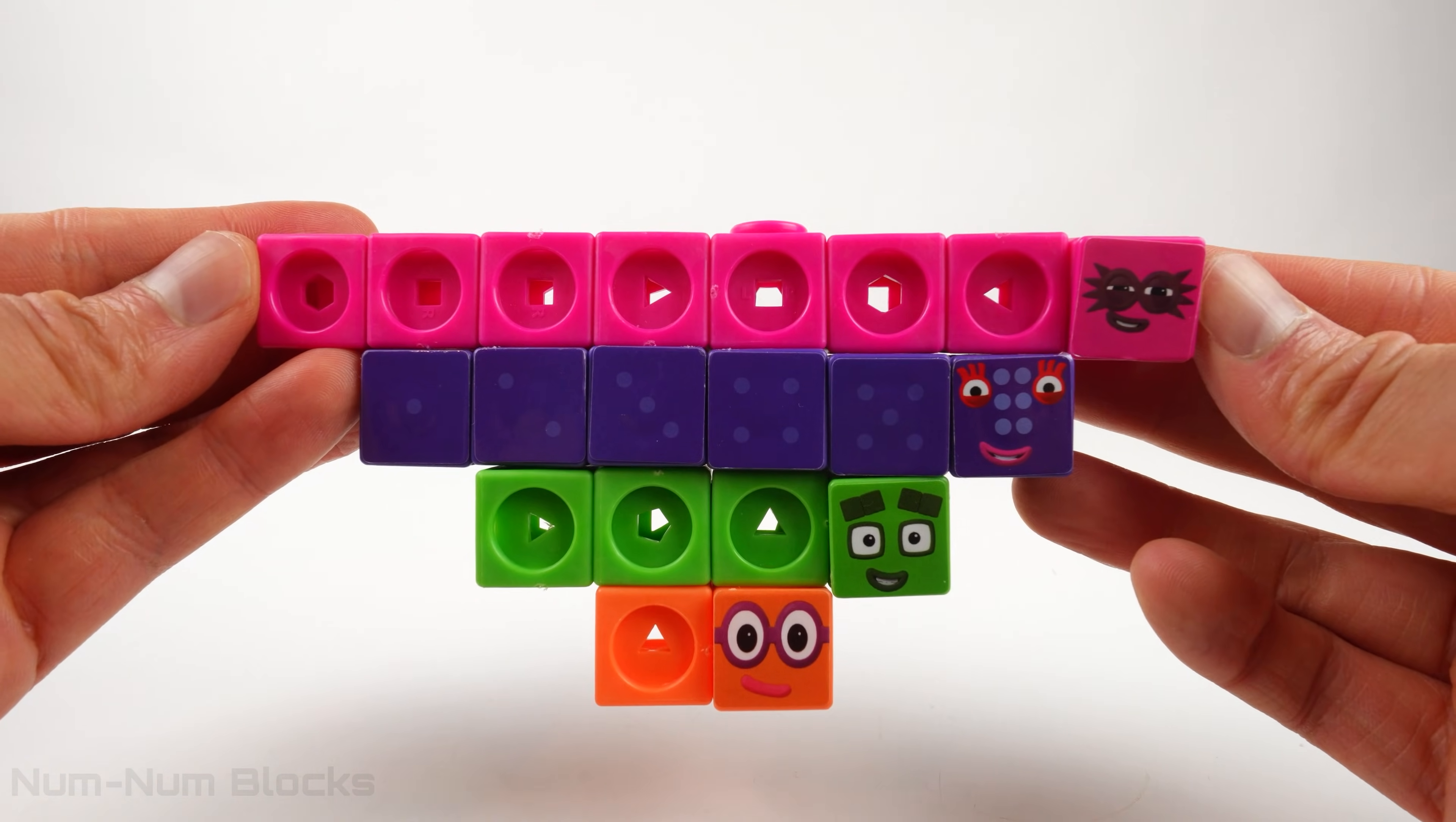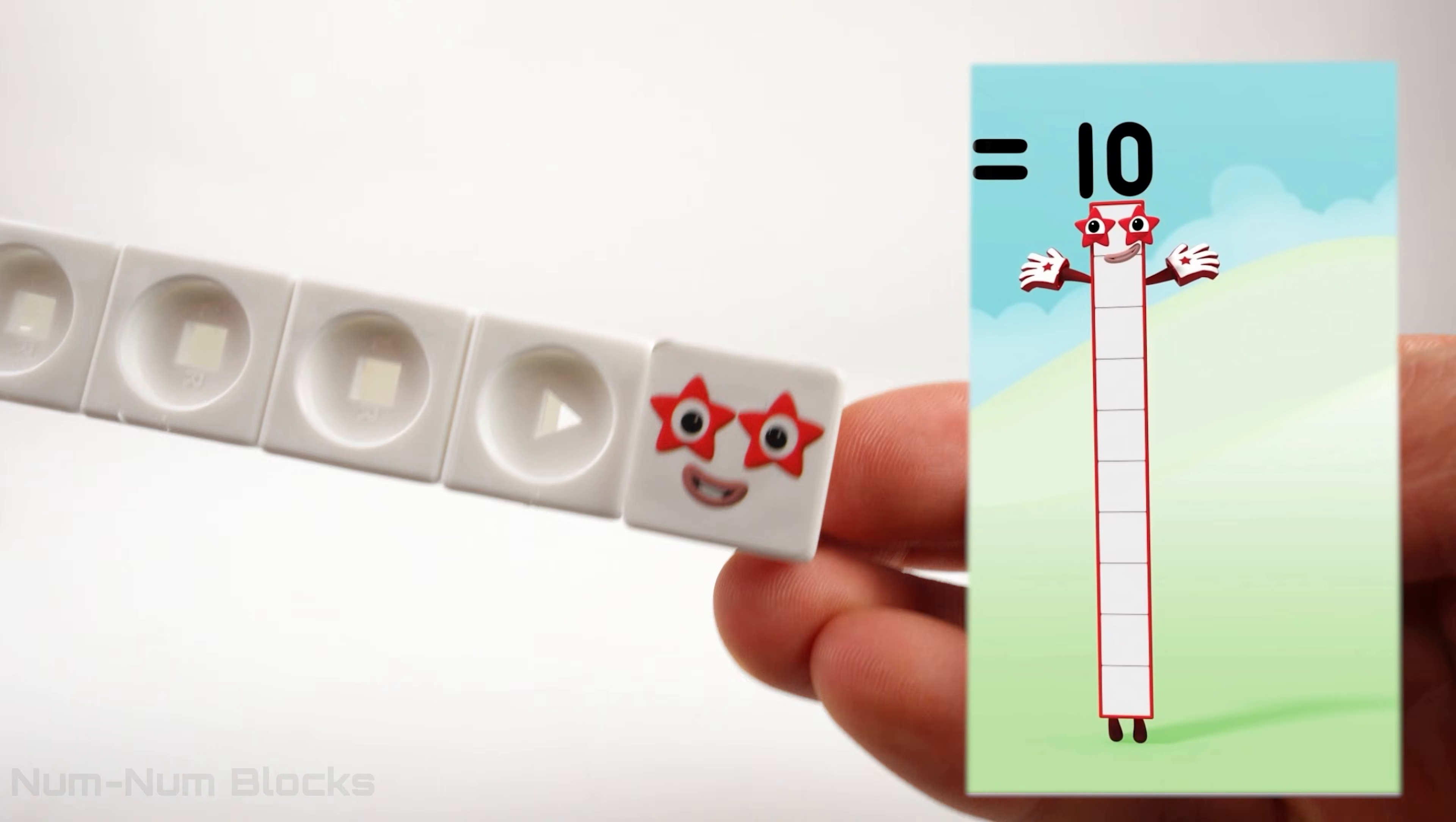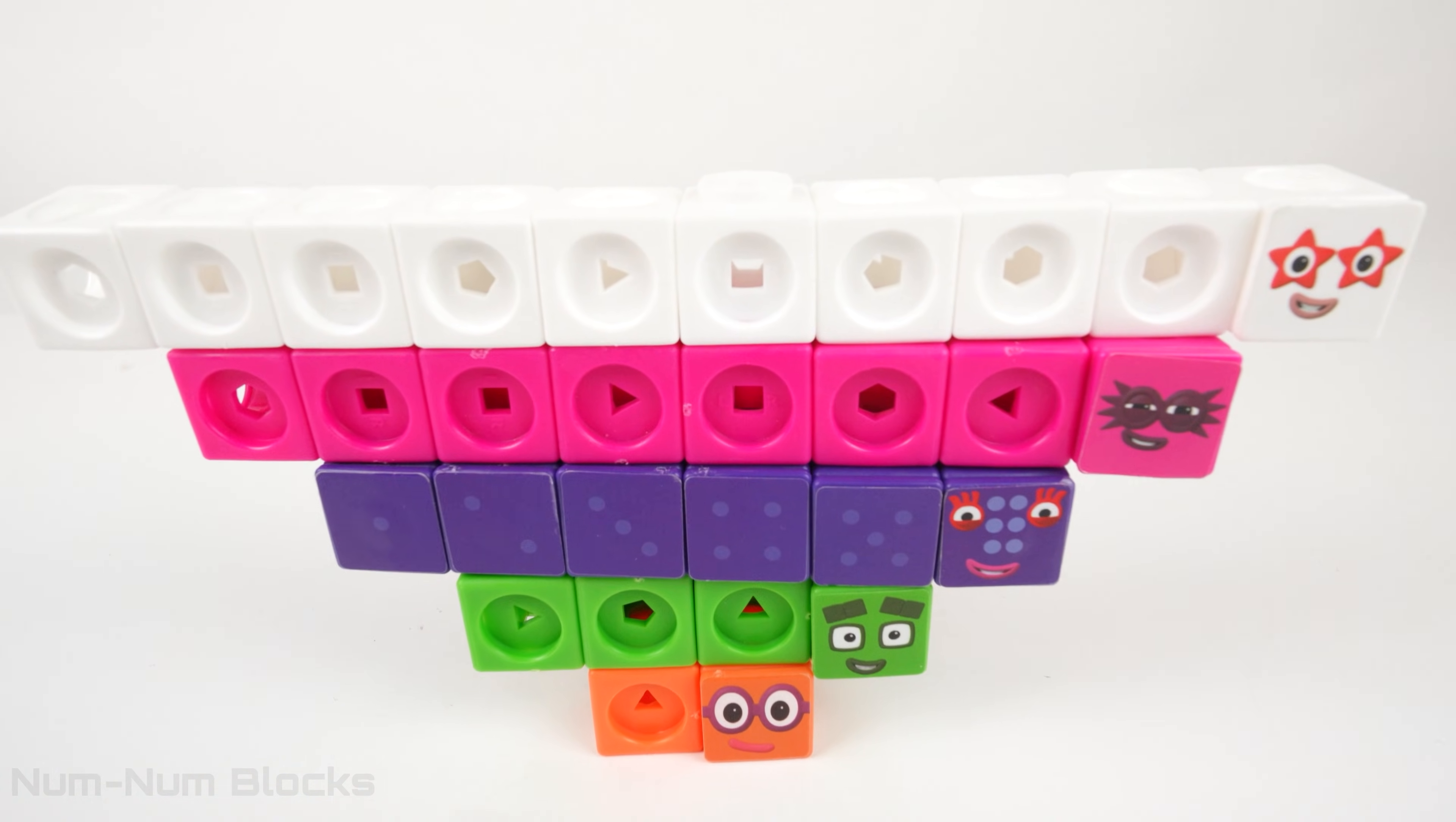2, 4, 6, 8. Let's build the last even number. Do you know what 1 plus 9 is? 10! It's 10! We did it! We built an upside down pyramid using even numbers!